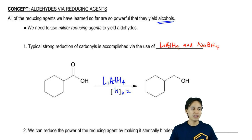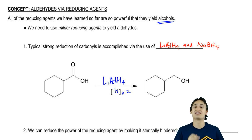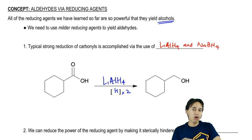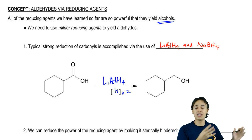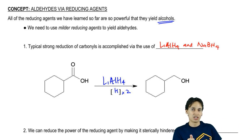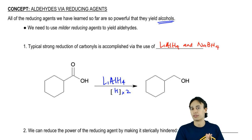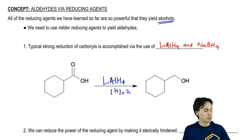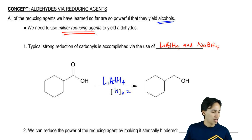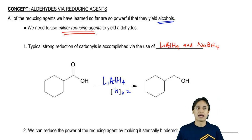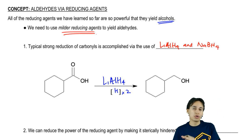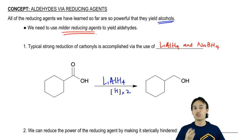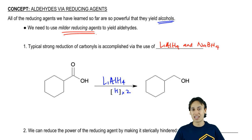This is great, but what if we want to stop with one equivalent of hydrogen? What if we don't want to go all the way to the alcohol? Instead, we want to just go to the aldehyde first and stay there. If that's our goal, we're going to have to use some milder reducing agents — ones that don't want to go all the way to the alcohol, that don't want to add two equivalents and are just okay with adding one equivalent of hydrogen instead.